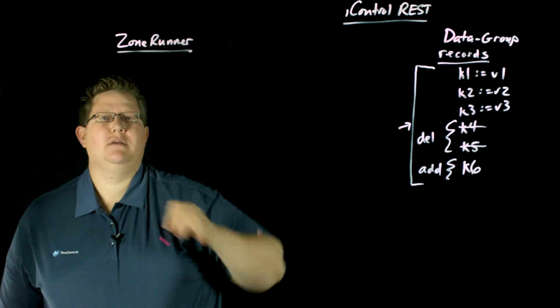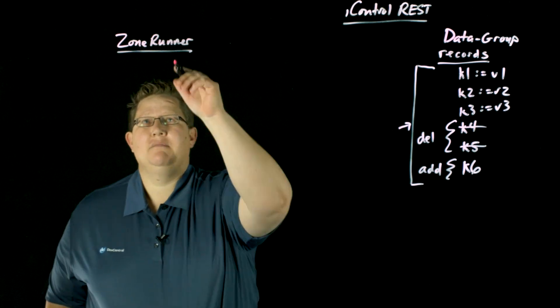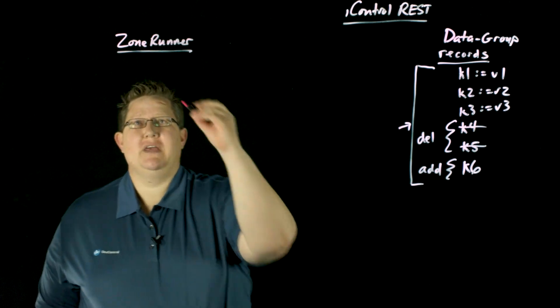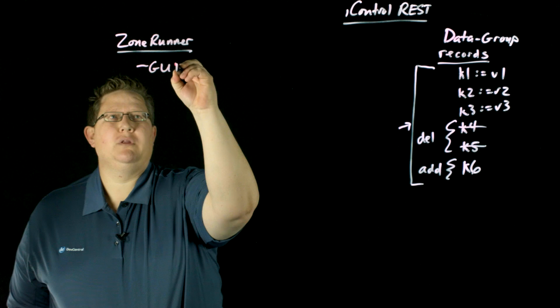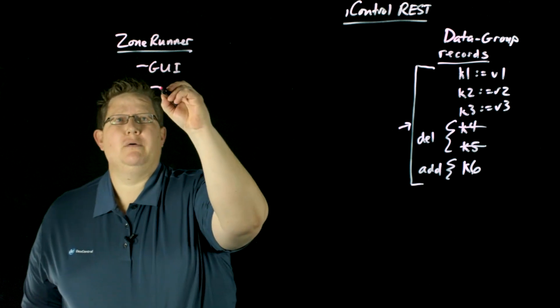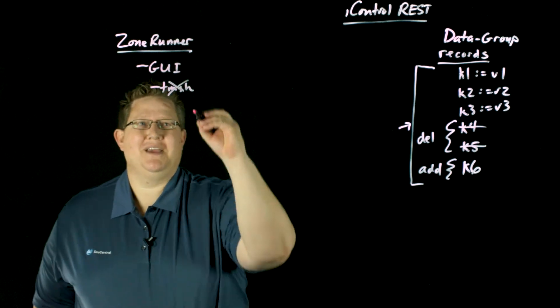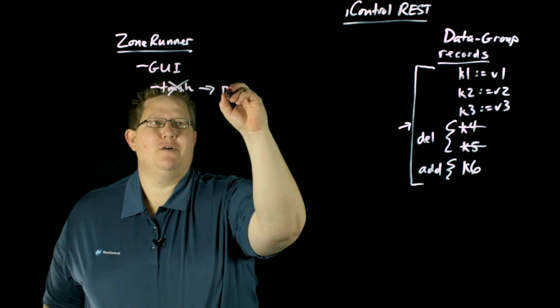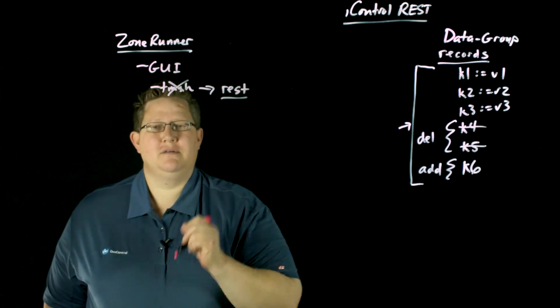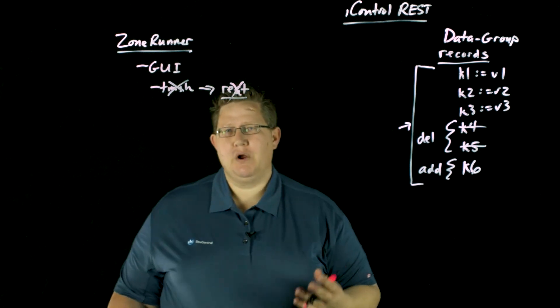And so the ask in the community is, why can't I make ZoneRunner changes that is GUI only on the command line? And so there aren't TMSH, there's no TMSH, and because there's no TMSH, there's no REST because REST is based on TMSH. So because that's out, REST is out too. All right, so what do you do?